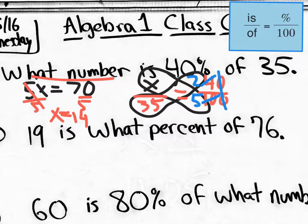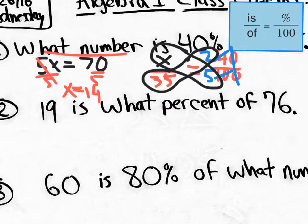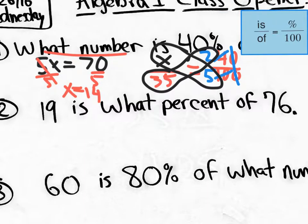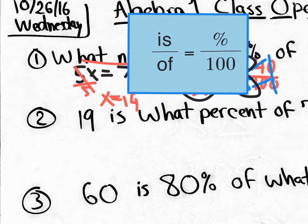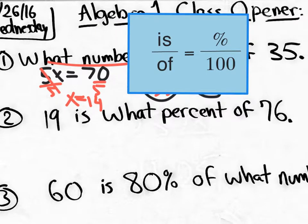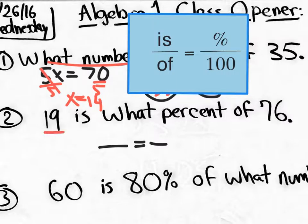So what number is 40% of 35? The answer is 14 — 14 is 40% of 35. Moving on to number two: 19 is what percent of 76? The 'is' value is 19, which goes on top. We don't know the percent, so that's our unknown, and it goes over 100. The 'of' value is 76.